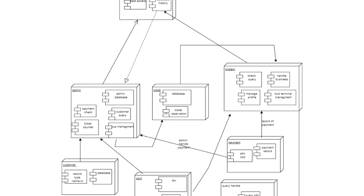The second block is Customer, which includes regular customers, permanent customers, and temporary customers. All records such as ID and name are stored in the database. The third block is Ticket, which stores all information about ticket reservation and all new records in the ticket deployment block.